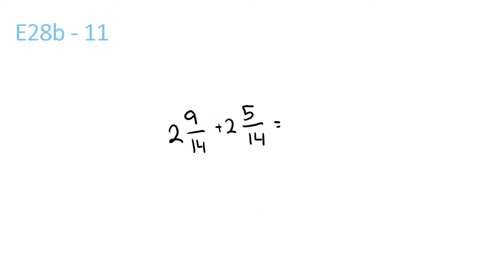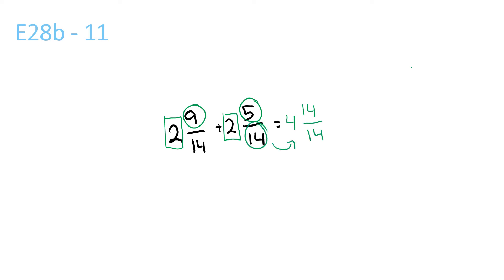For this one, we add the whole numbers at the front: 2 plus 2 is 4. Then we add the top ones, 9 and 5, giving 14. Then we bring the 14 over — so it's 14 over 14. We need to convert this, but that's just the same as 1. So it's this 4 here plus that 1, which is 5.